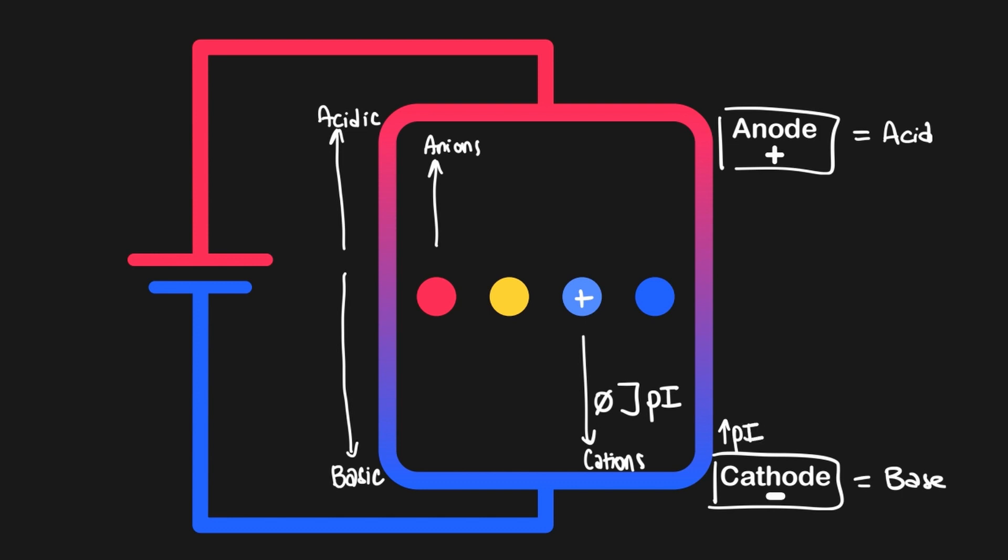Essentially, the more positively charged the peptide, the higher its PI, and the more negatively charged the lower its PI.